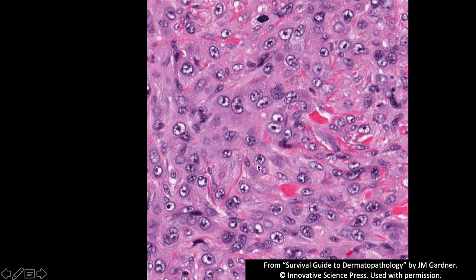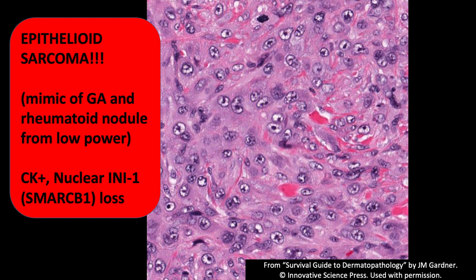Here's another one where you've got palisading around a necrotic or necrobiotic center, but when you look closer, that looks pretty nasty. This is really important to never forget — it's rare, but it's super bad if you miss it. This is epithelioid sarcoma, which can mimic GA and rheumatoid nodule both clinically and microscopically. The key is when you look closely at those histiocytes, they turn out to not be histiocytes at all, but big ugly cells, usually with pale nuclear chromatin and big nucleoli, and a lot of mitoses — although it's totally normal to see mitoses in rheumatoid nodule and granuloma annulare. If you have any suspicion, you can do stains like keratin or EMA, and nuclear INI-1 or SMARCB1 loss is the hallmark of this disease. We know now that a growing list of tumors show INI-1/SMARCB1 loss, so it's not a totally specific finding — it has to fit with the H&E and the clinical context. But this is a really terrible form of sarcoma that you don't want to miss.